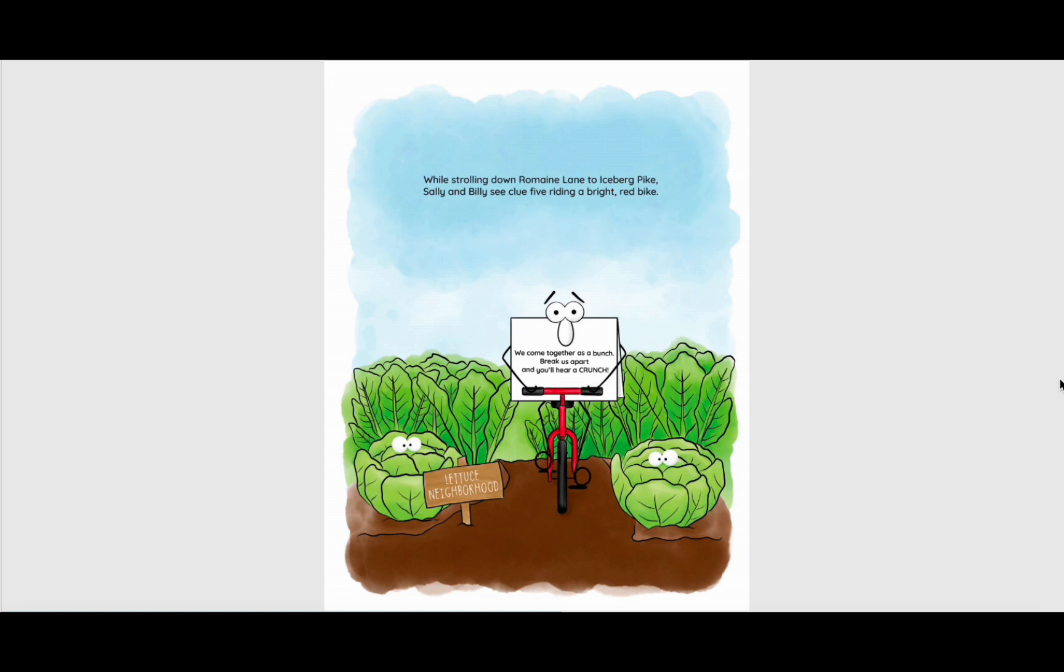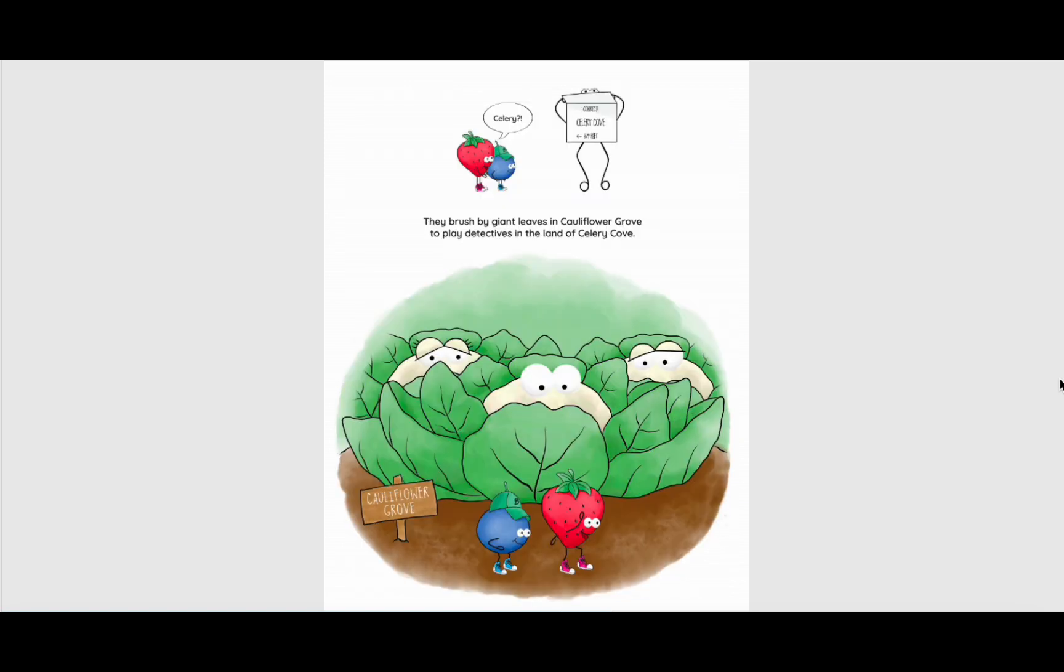While strolling down Romaine Lane to Iceberg Pike, Sally and Billy see clue five riding a bright red bike. We come together as a bunch. Break us apart and you'll hear a crunch. Celery. Celery Cove. They brush by giant leaves in Cauliflower Grove to play detectives in the land of Celery Cove.